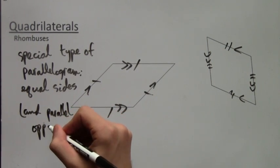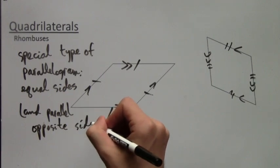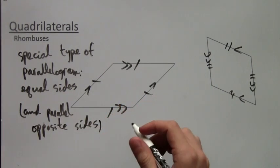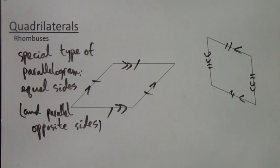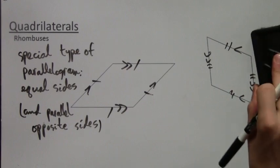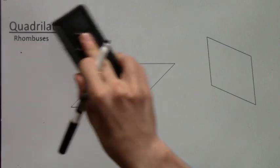So don't forget, equal sides is not enough for it to be a rhombus. It must also be a parallelogram or have parallel opposite sides. Alright, let's move on to the next special type of quadrilateral.